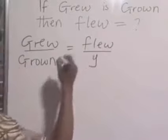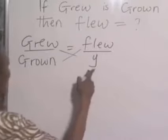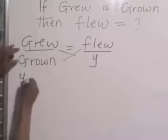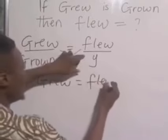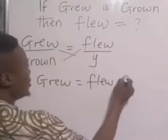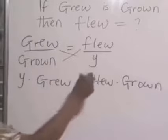so we can represent it with y. Then cross-multiply, y times grew equals flew times grown. That is cross-multiply.